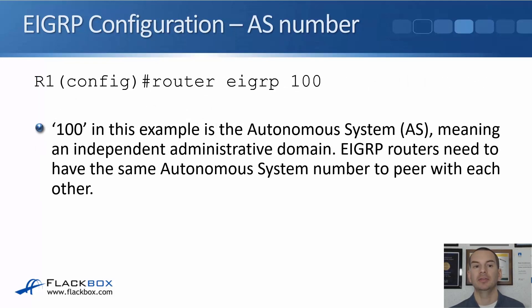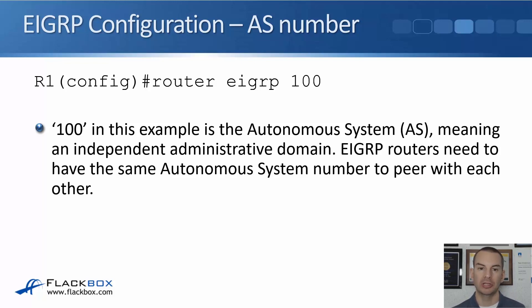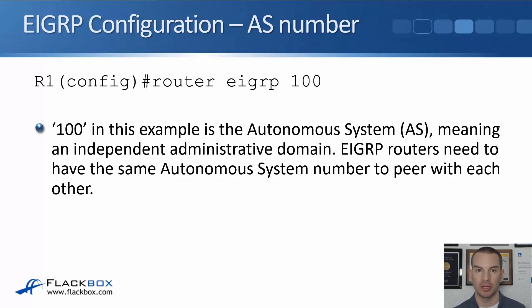Looking at the EIGRP configuration, to enable it we say 'router eigrp' and then an AS number at global config. The AS is the autonomous system number, meaning an independent administrative domain. EIGRP routers need to have the same AS number to peer with each other.